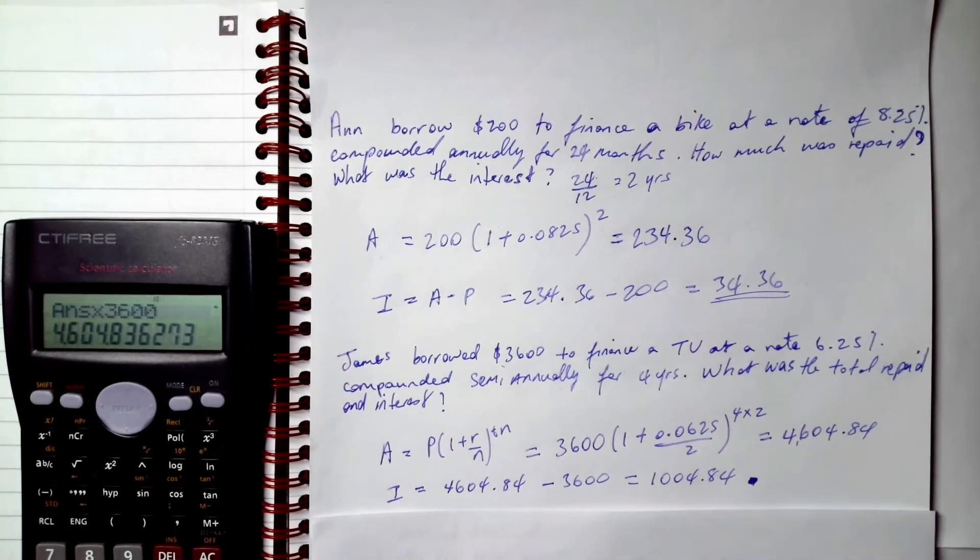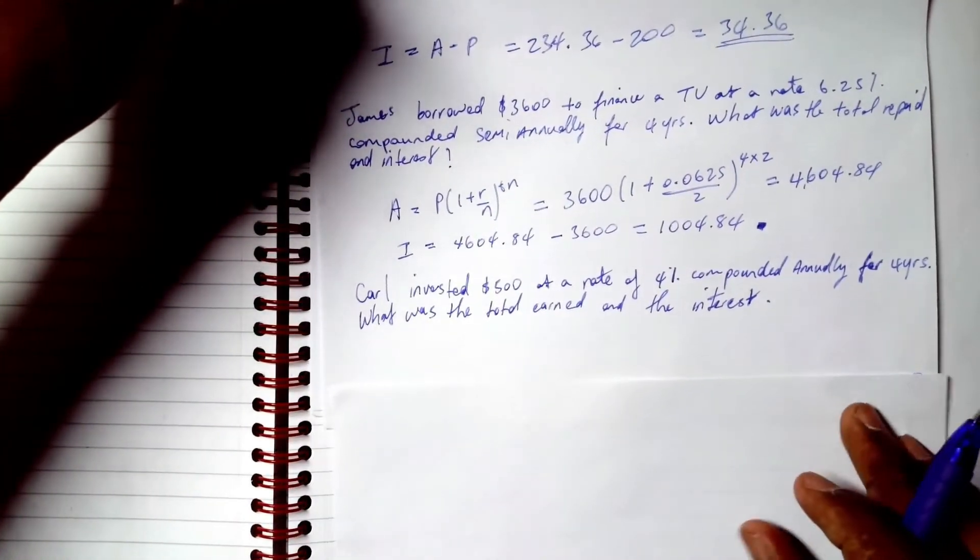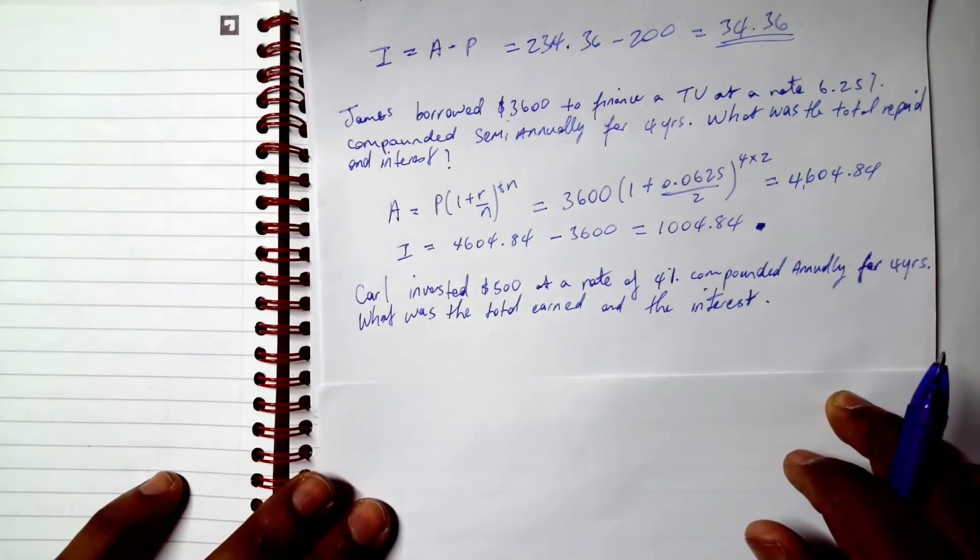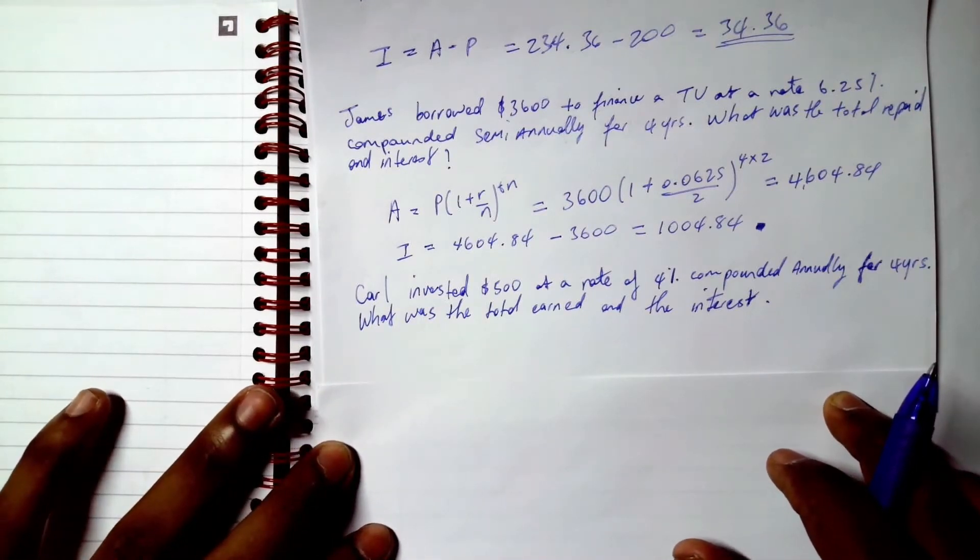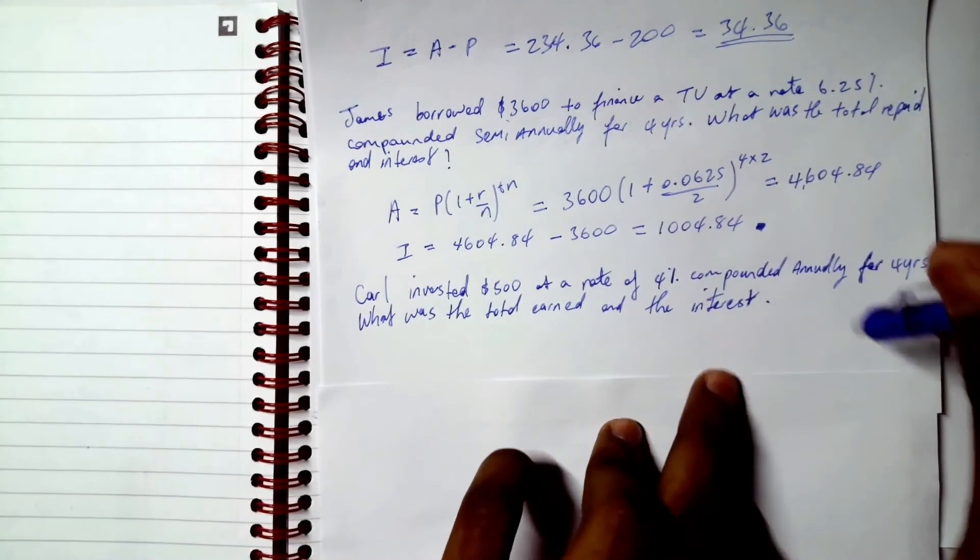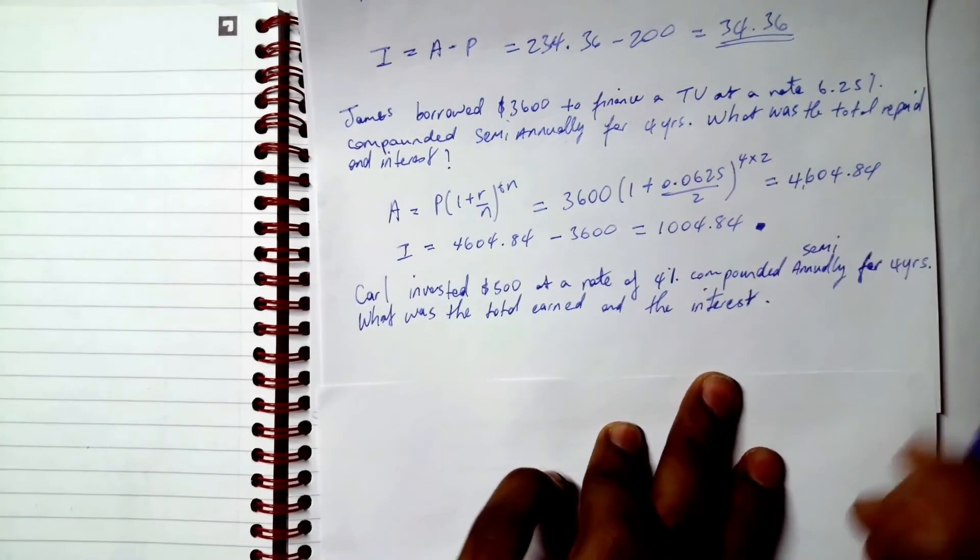Yeah, and this little box means we're finished. All right, so we have the last one right here. So Carl invested $500 at a rate of 4% compounded annually for four years. What was the total earned and the interest? Oh no, semi-annually. Semi-annually.